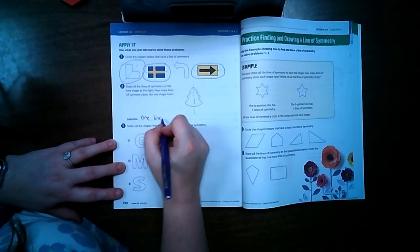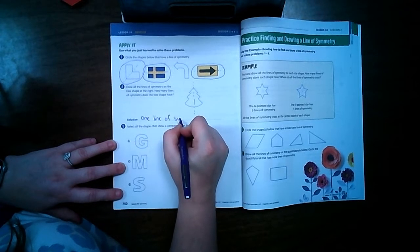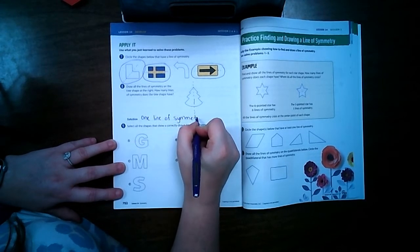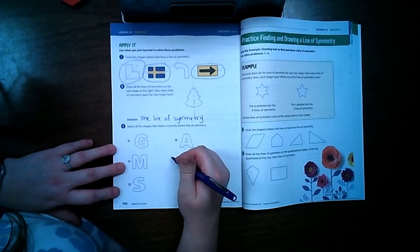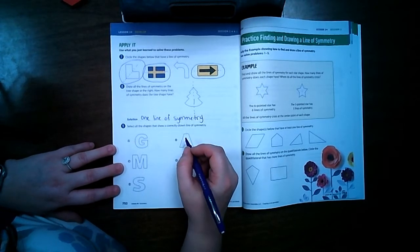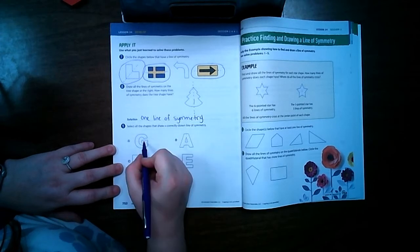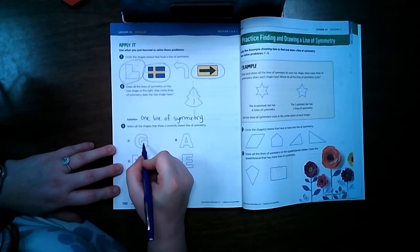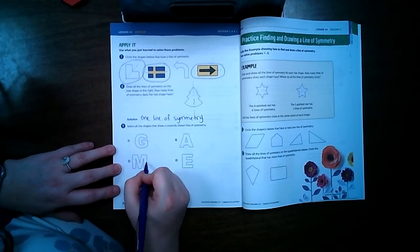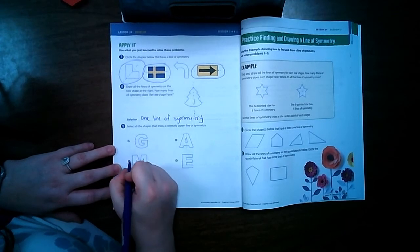Now we're down here on the letters. The letters are kind of tricky but you'll get the hang of it. Select the shapes that correctly draw a line of symmetry. This is obviously not right because that's a space and there's no space right there.